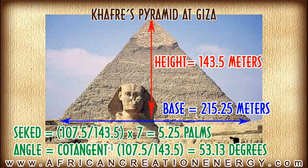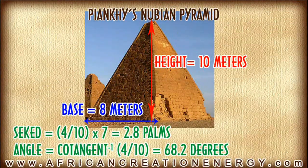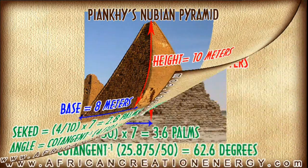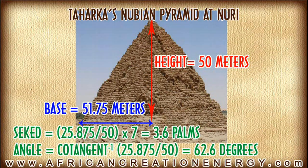Now let us look at the Nubian pyramids in Sudan. Piyankhi's Nubian pyramid had a height of 10 meters and a base of 8 meters, giving a Seqed of roughly 2.8 palms, equivalent to 68.2 degrees. Taharqa's Nubian pyramid built at Nuri had a height of 50 meters and a base of 51.75 meters, giving a Seqed of roughly 3.6 palms, which is approximately 62.6 degrees. The Nubian pyramids tend to have Seekeds in the 2 to 4 range with steeper angles in the 60-degree range.